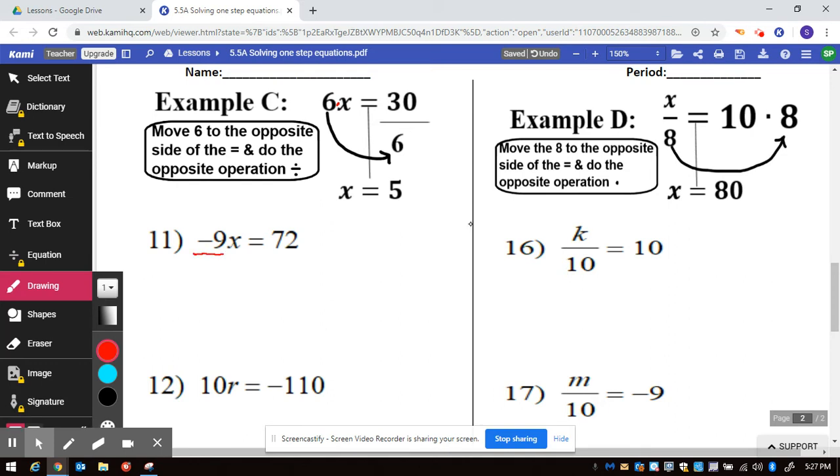Because when you do divide, for instance on number 11, you look at negative 9 divided by negative 9. Well, that's 1x. You don't need the value of negative 9x's, you need the value of 1x. So 72 divided by negative 9 is going to be negative 8.